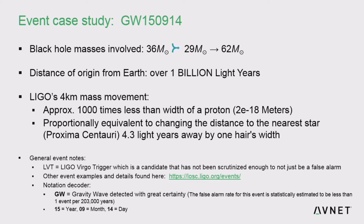LIGO turned on around 2015 — it's still on — but the public data only goes up to about 2017, and these are the five events they've told the public about. To give you an idea of how weak these signals are and how little that mass moved: for this size of merger, half the width of a proton — 2×10^-18 meters — is what that mass moved. That's it.